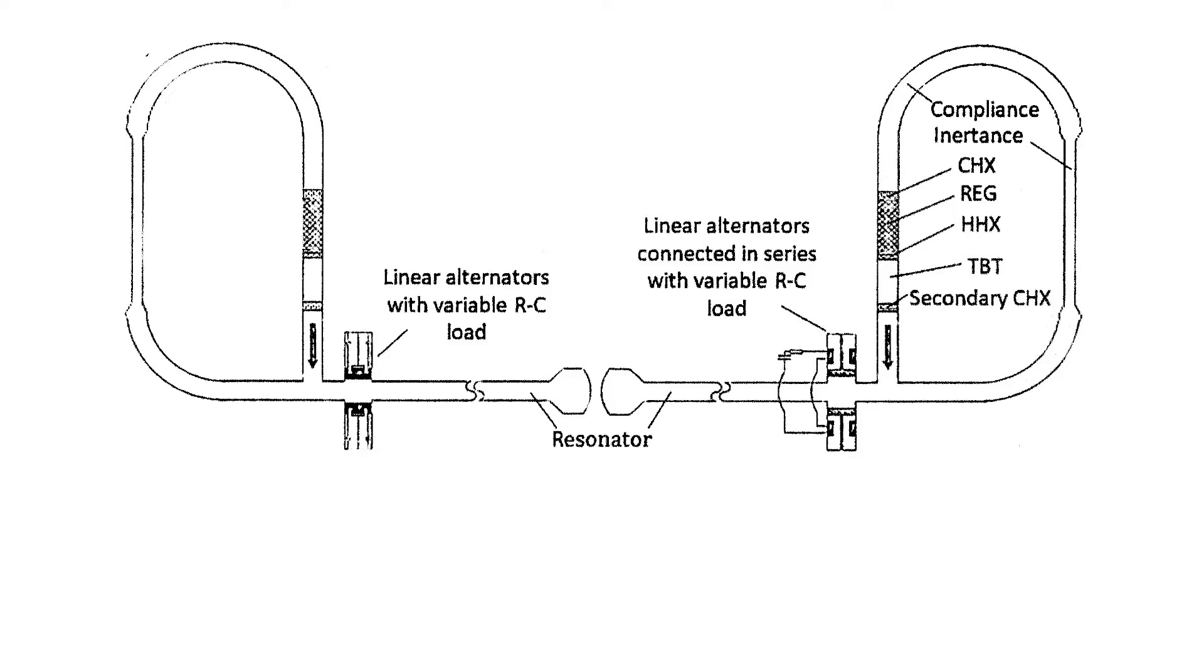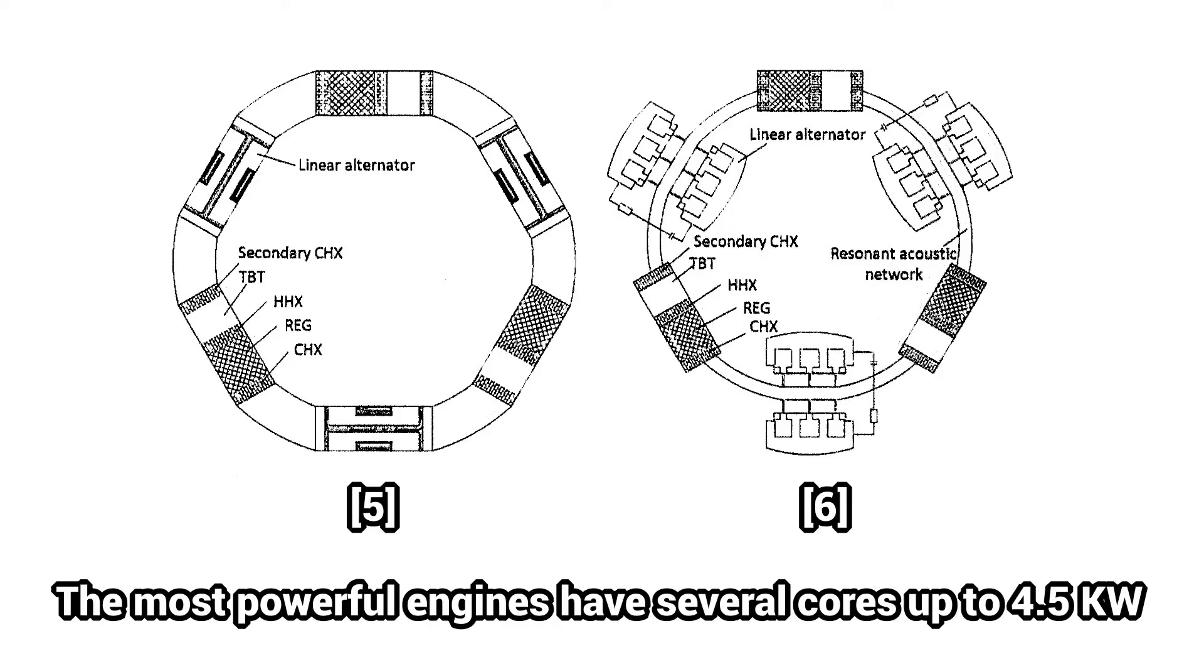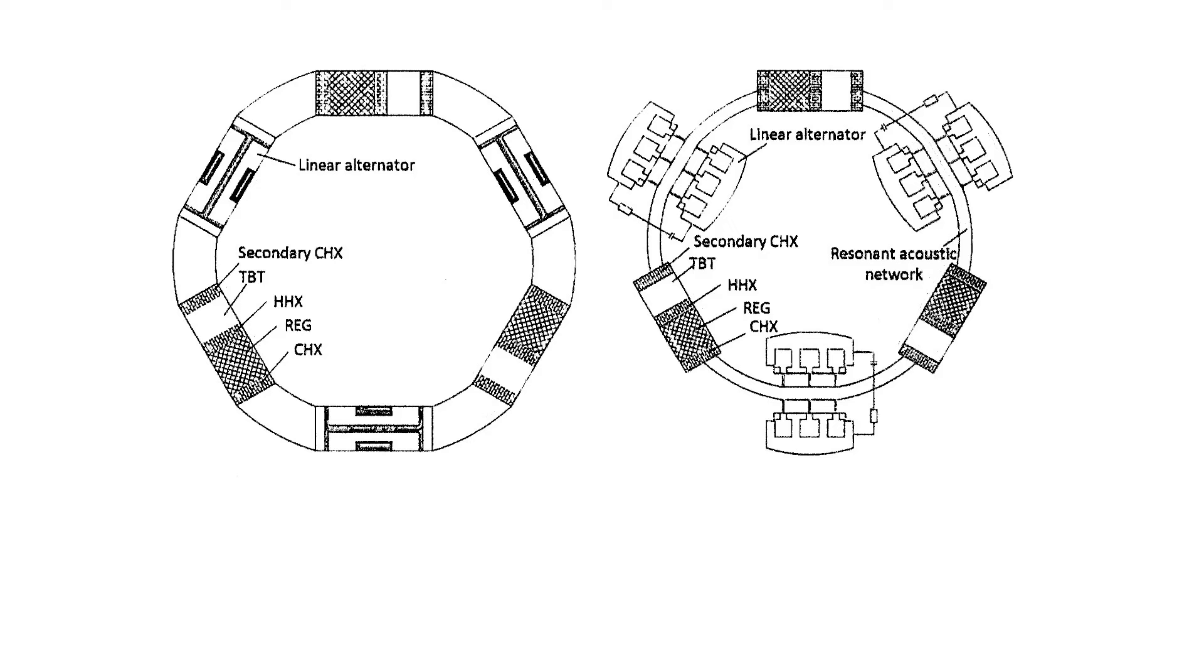The most powerful thermoacoustic engines use circular arrangements with multiple cores in series, each with its own power extraction unit. They reach overall efficiencies up to 20% and a maximum power output of 4.5 kilowatts.